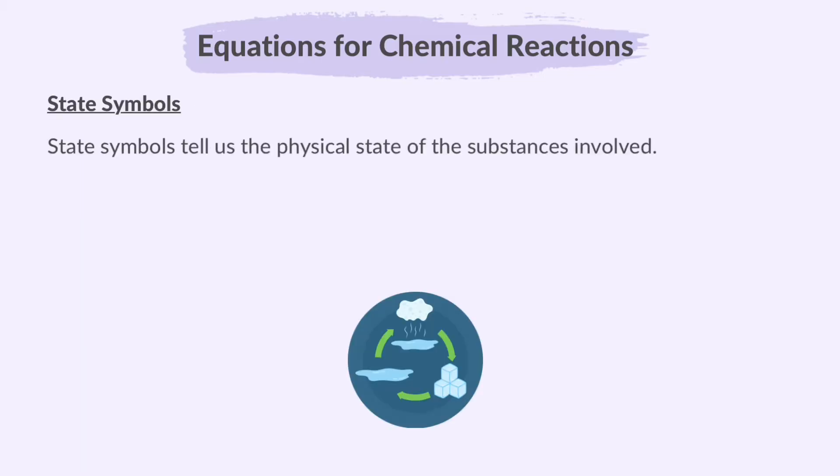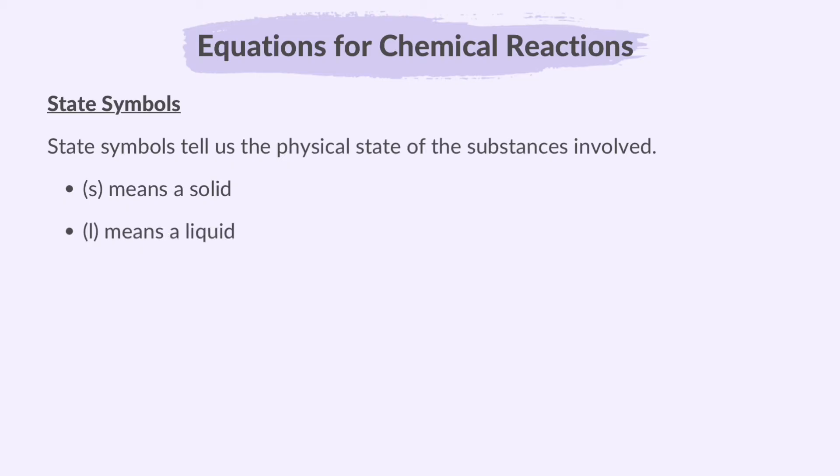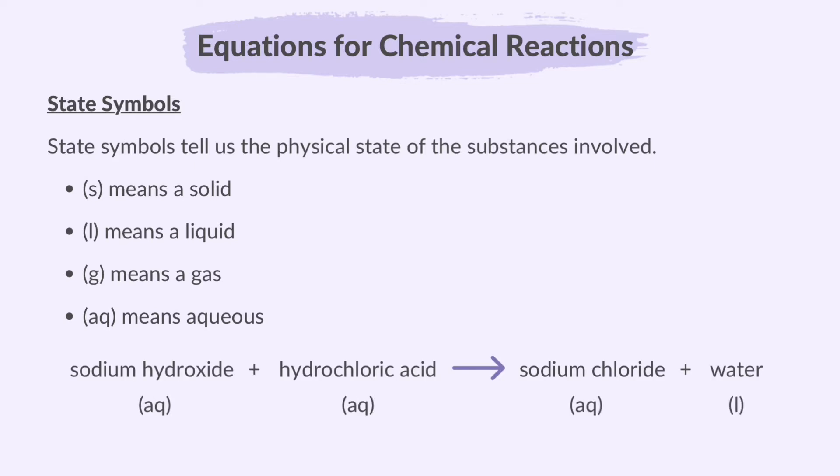State symbols tell us the physical state of the substances involved. S means solid, L means a liquid, G means gas, and AQ means aqueous. It indicates that a substance is dissolved in water. So for our previous example, these will be the state symbols.